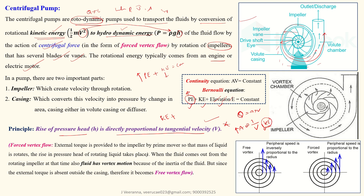This process uses the forced vortex and free vortex concepts. In a forced vortex, the impeller rotates due to an external torque from the prime mover. The liquid on the impeller also rotates, gaining velocity, which results in a rise in pressure head of the rotating liquid — this is called the forced vortex.